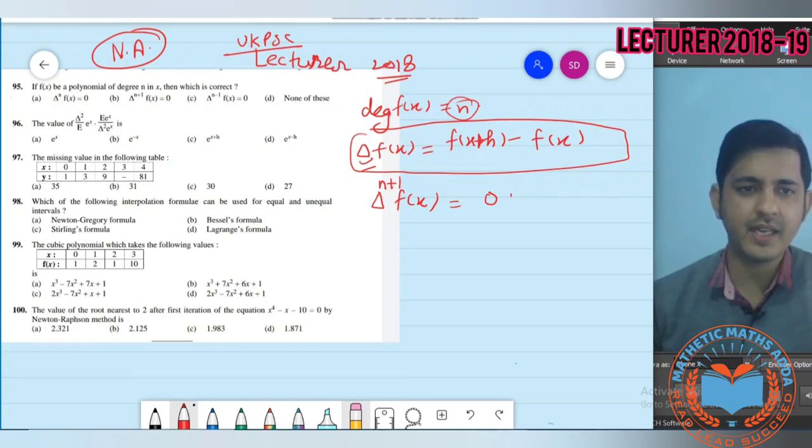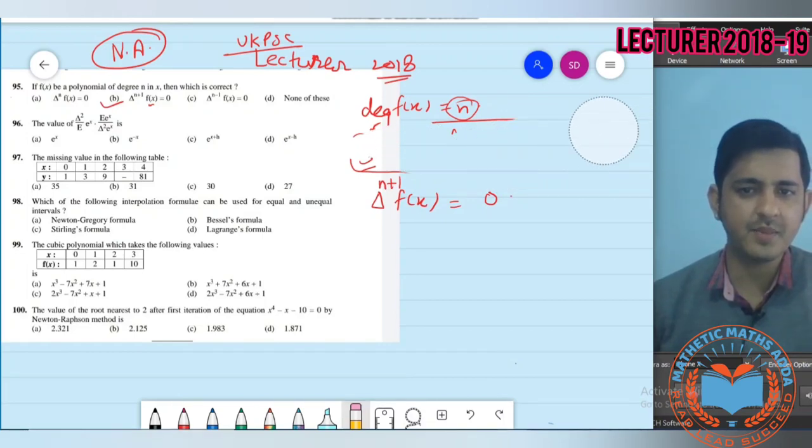Del to the power n of f(x) is constant. Del to the power n+1 of f(x) is zero. Since the forward difference is more than the degree, the value is zero. So the second option is correct. The answer to question 95 is B.